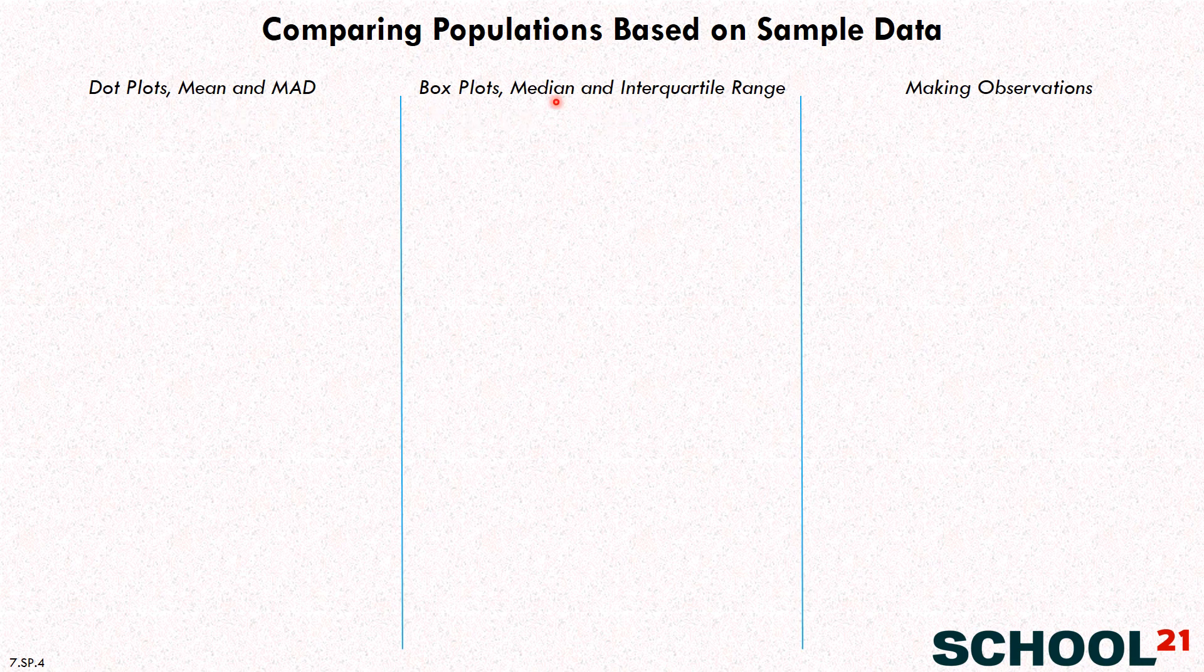Of course, mean and median are measures of center, and MAD and interquartile range are measures of variability or how much the data are spread out. And then out of that, we'll make some observations. So what this is all based on is sampling from a population.